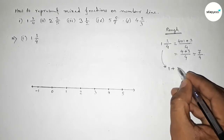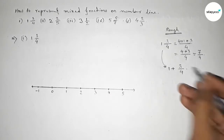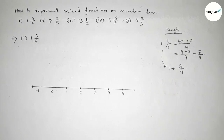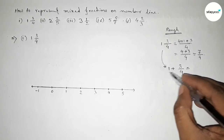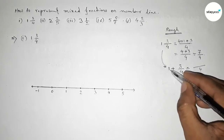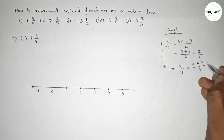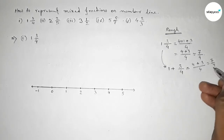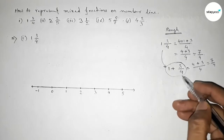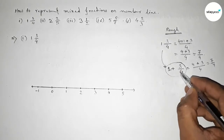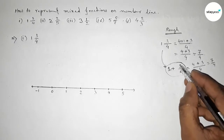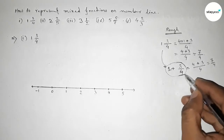We can also write it as one plus three over four. Taking LCM four, we get four plus three over four, which is seven over four. So we have to represent one plus three over four — mainly we have to represent three over four on the number line.